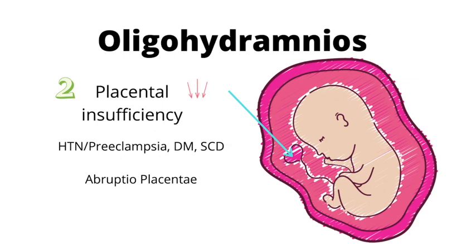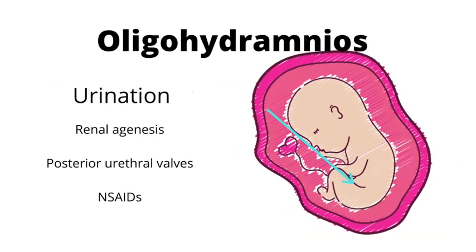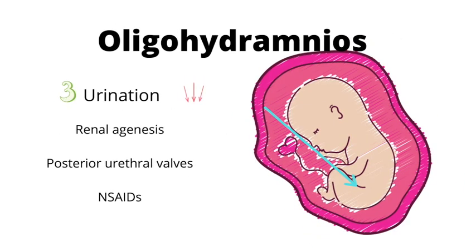And of course, abruptio placentae. Placental insufficiency causes a decrease of amniotic fluid. Another factor is urination — specifically, if urination is affected, this causes oligohydramnios. This can be due to states like renal agenesis or posterior urethral valves. Drugs used by the mother, such as NSAIDs, ACE inhibitors, and ARBs, can also lead to renal insufficiency or affect the overall development of kidneys.